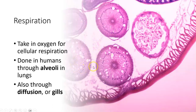Respiration is something every animal — and many other creatures — do. In humans, respiration is carried out through alveoli. It can also occur through diffusion or gills, depending on the creature. Remember that O2 is needed for cellular respiration, which is why we take in oxygen. That's a little bit of review before exam three.